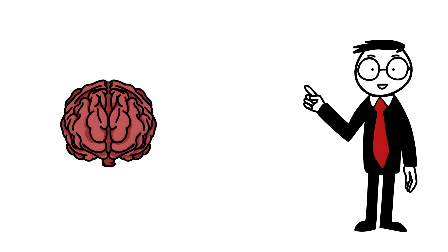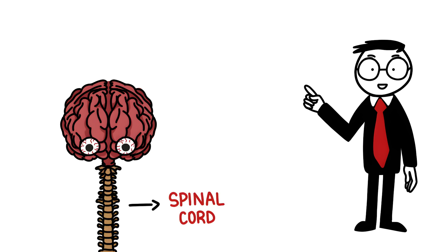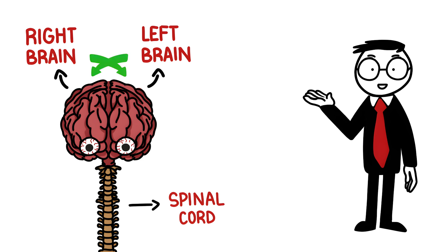Number one, the human brain. Apart from being the control center of the central nervous system, it is divided into two hemispheres, with each hemisphere controlling the opposite side of the body. Simply put, the left side of the brain controls the right side of the body, and vice versa.